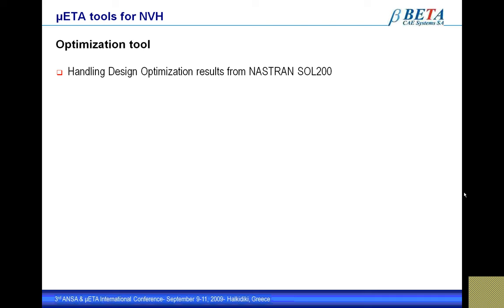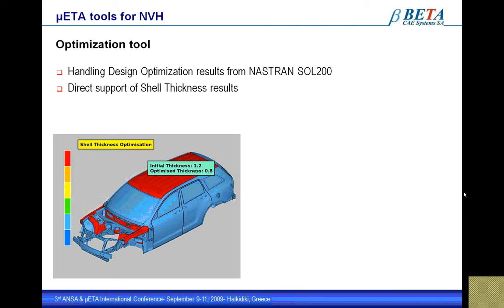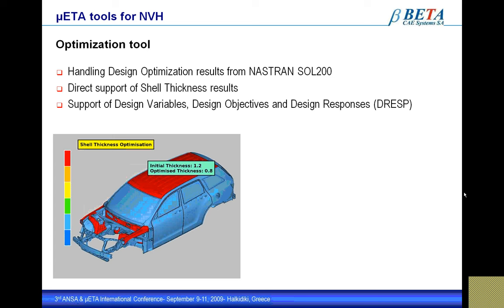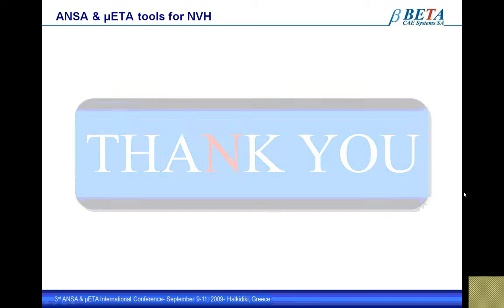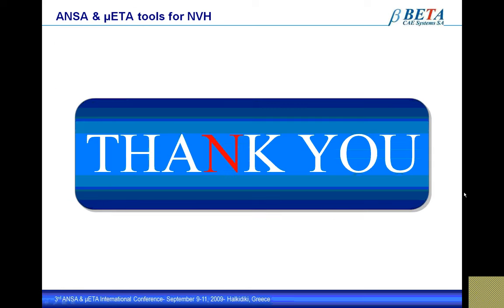Handling design optimization results from NASTRAN Solution 200: after running a NASTRAN SOL 200 analysis — for example a shell thickness optimization — the results included in the punch file can be reviewed in MetaPost using 3D plots for design responses, design variables, and design objectives. In 3D, it is possible to get a picture of which PIDs have changed thickness, displayed as a contour plot on the model. In a static 2D plot, the development of design variables per cycle according to the design responses is illustrated. Thank you very much for your attention.